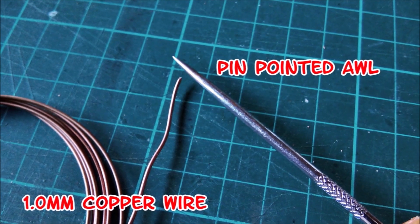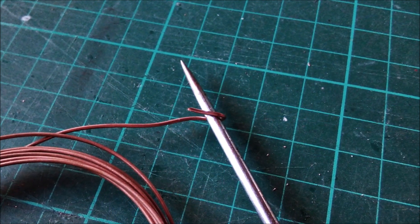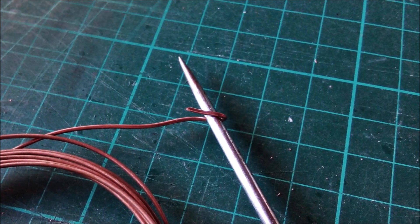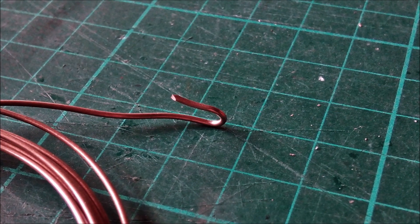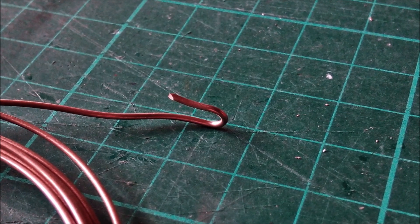First step is to bend the 1mm copper wire around a rod of an appropriate diameter. I used this awl. The result is a U shape. You can use flat pliers to make the U wider or narrower just the way you need it.